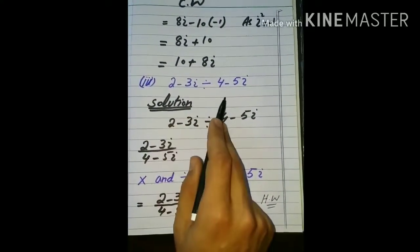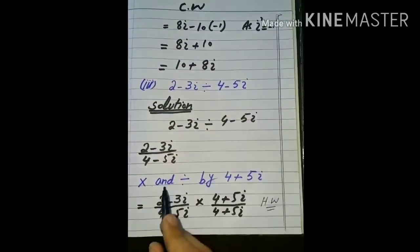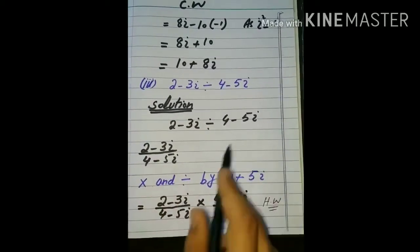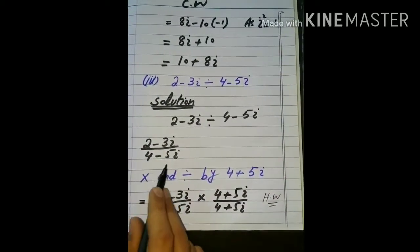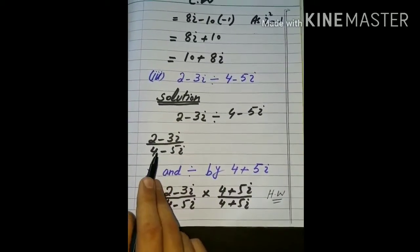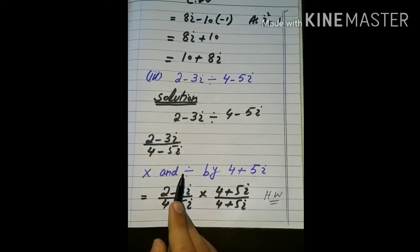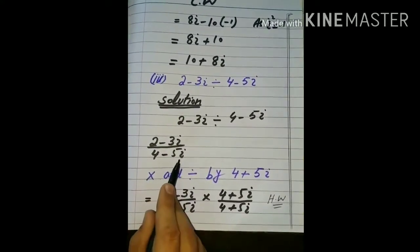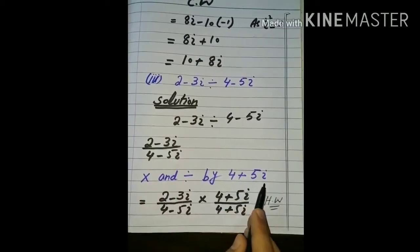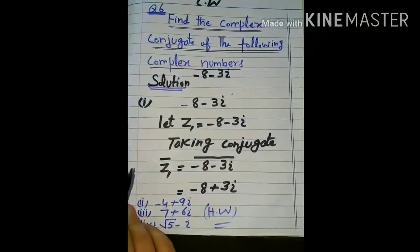ہمارے پاس division کا question ہے — اس complex number کو divide کرنا ہے: two minus three iota divided by four minus five iota۔ میں نے بتایا کہ نیچے والے number کا conjugate multiply اور divide کرنا ہے۔ conjugate میں ہم iota والے part کا sign change کرتے ہیں تو یہ four plus five iota سے multiply اور divide کریں گے۔ باقی آپ لوگوں نے گھر میں homework کرنا ہے۔